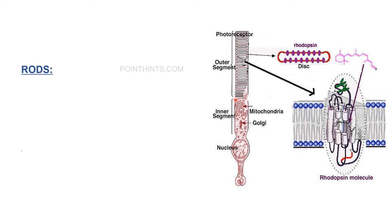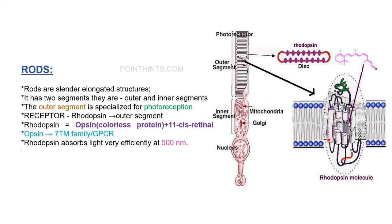Rods are slender elongated structures which have an outer segment and an inner segment. The outer segment is responsible for photoreception because the protein responsible for reception of light is present here. The protein molecule is called rhodopsin, which has two components: opsin and 11-cis retinal. Opsin is a colorless protein whereas 11-cis retinal is a prosthetic group derived from vitamin A. The absorption of light is done by the opsin molecule, whereas the color of rhodopsin and its responsiveness to light depend on the presence of retinal, which is also called the chromophore.